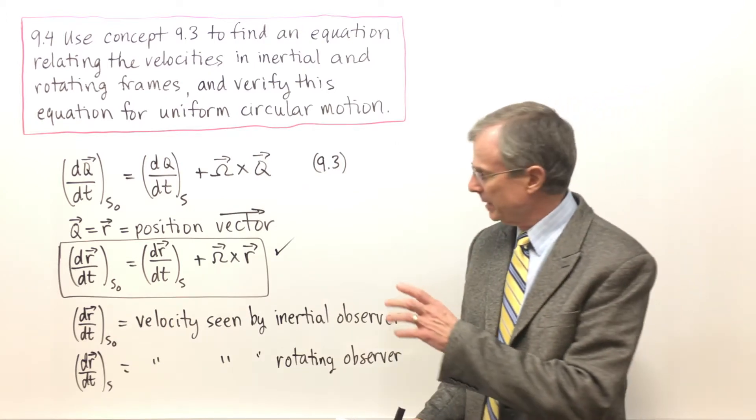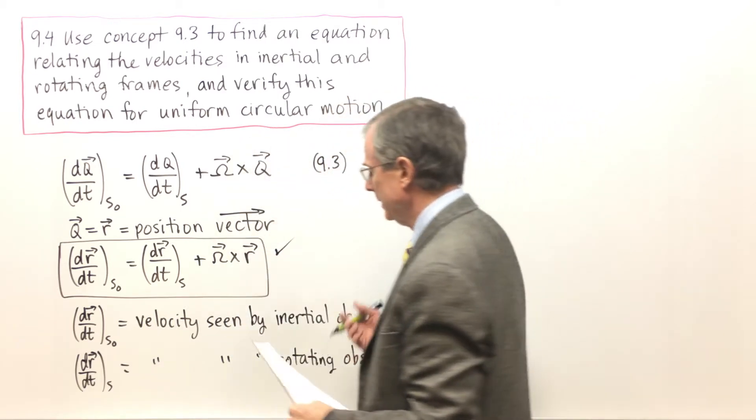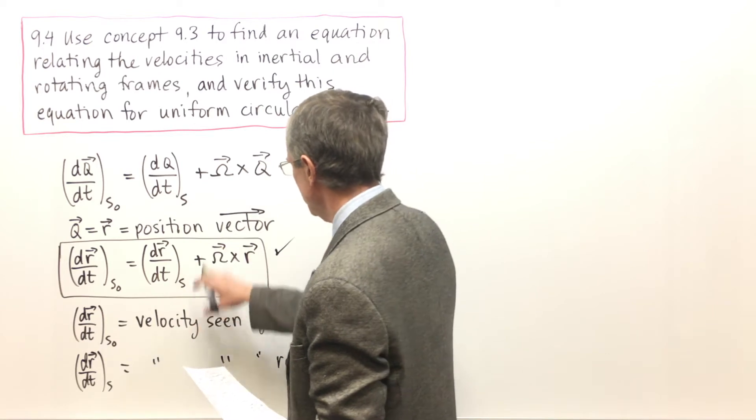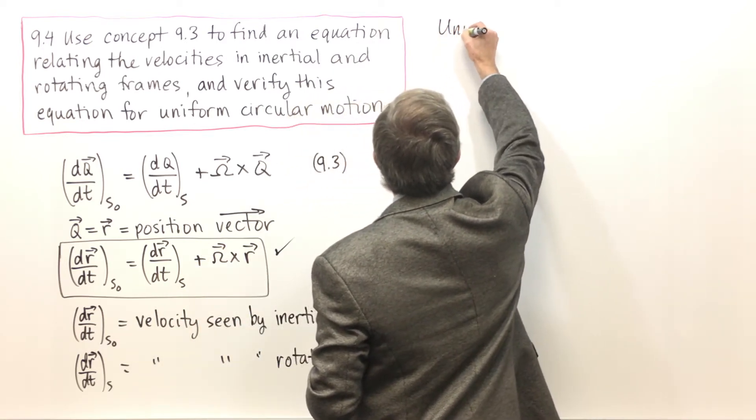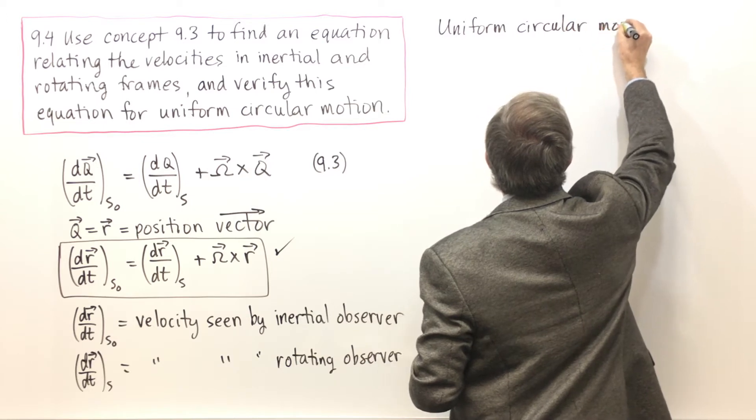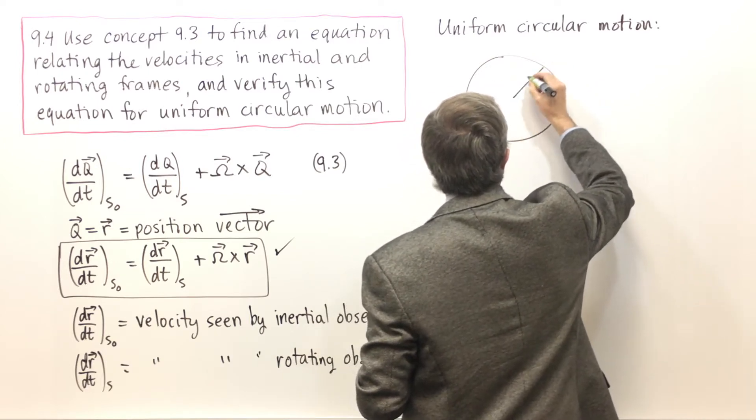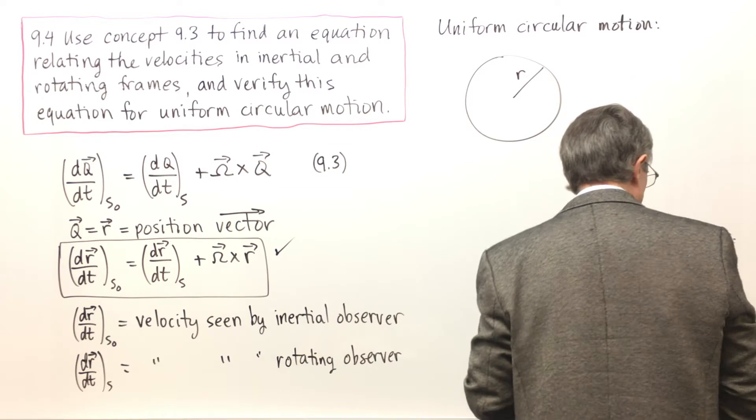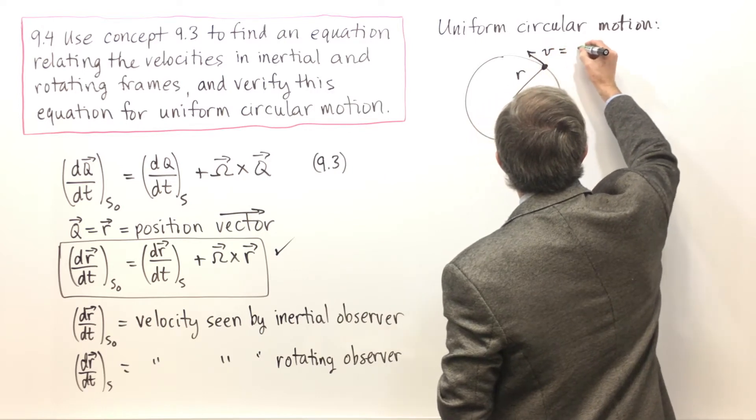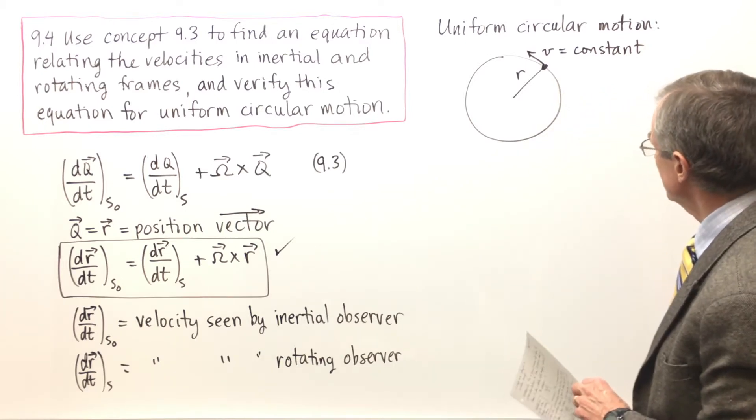Now verifying for uniform circular motion will help you develop some intuition for what this equation really says. So for uniform circular motion, what does that mean? It means that an object is going in a circle of radius r with constant speed. That's what uniform circular motion is.